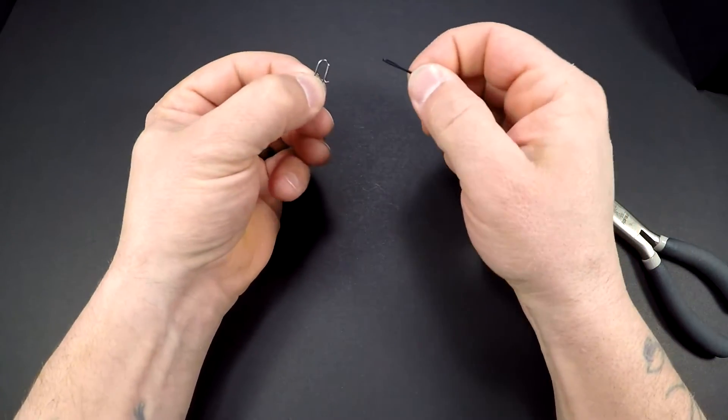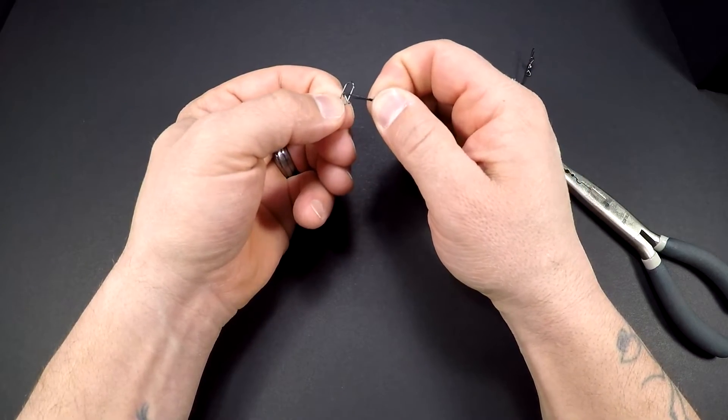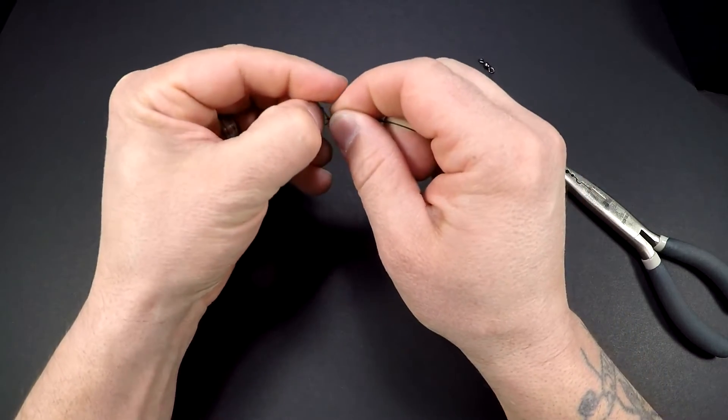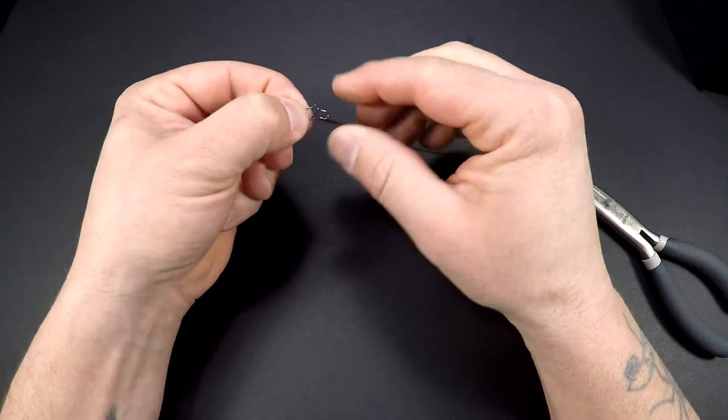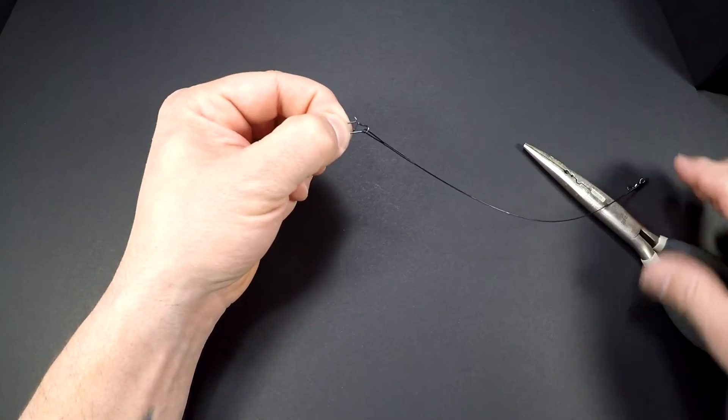Now put the fast lock snap on through the loop and around till you get it on the end of the fast lock snap, just like that.